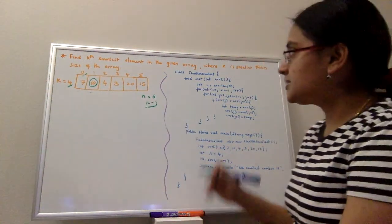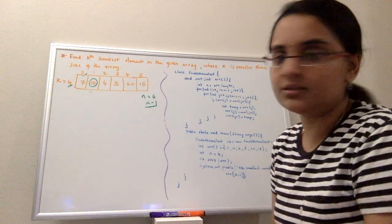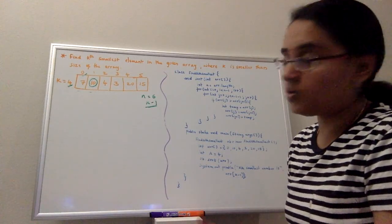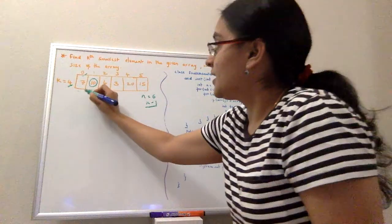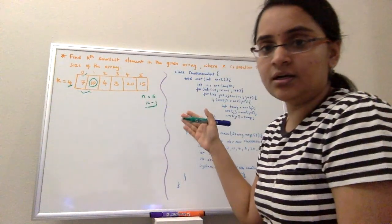This is how it is implemented. You can pick any sorting algorithm. I picked bubble sort here. Using bubble sort, what I'll be doing is basically compare each element with every other element till the end of the array.